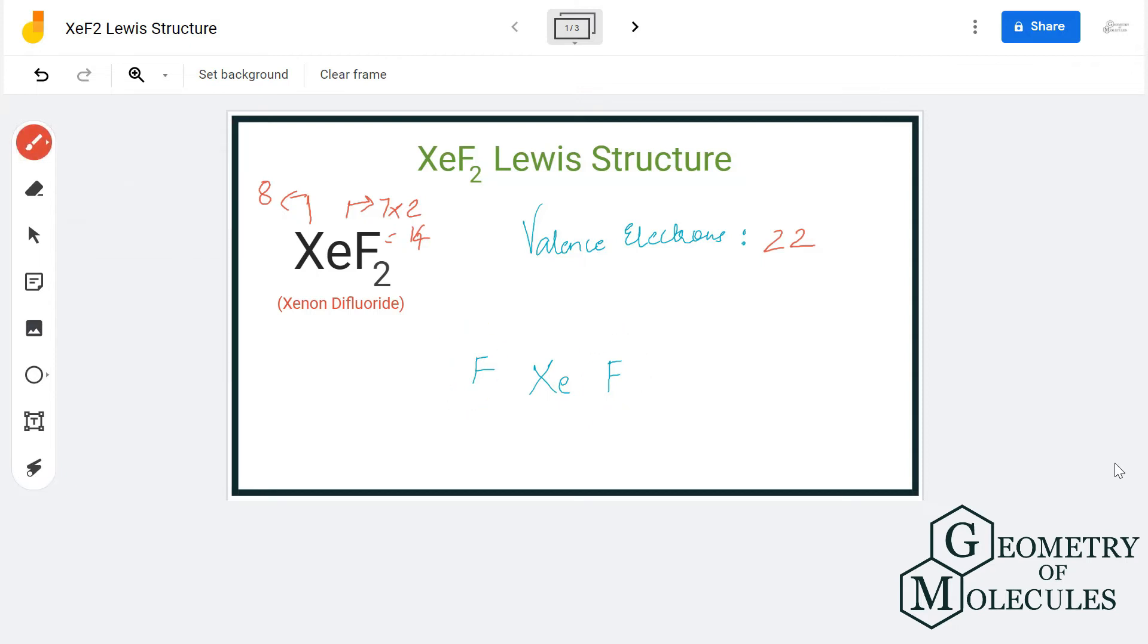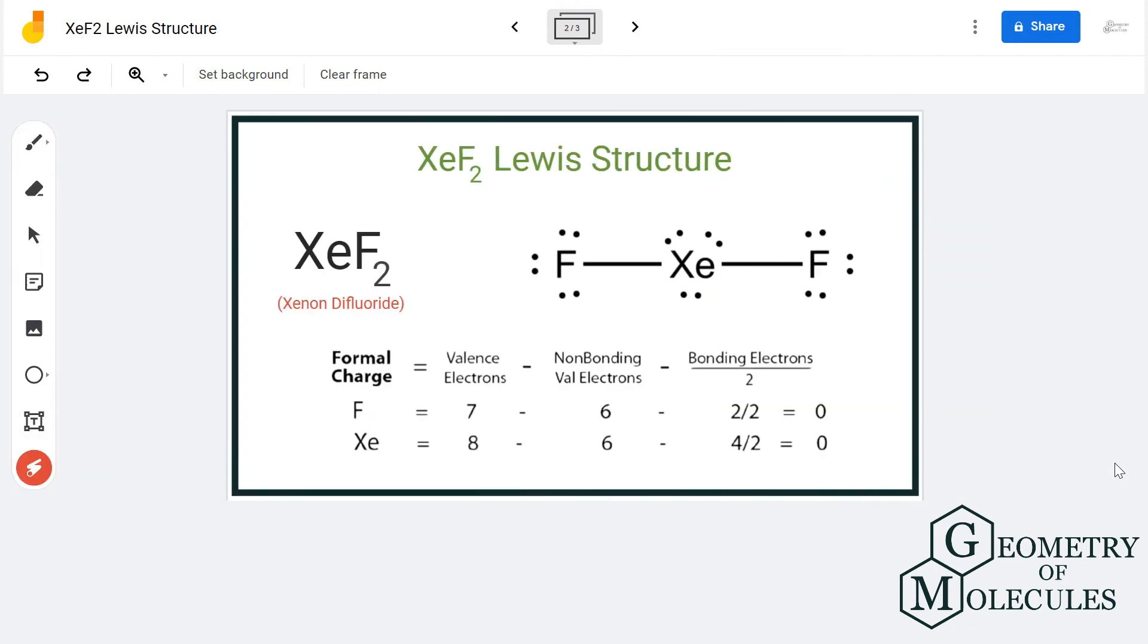There will be a single bond between the xenon atom and fluorine atom, so we will show that by drawing a line. Now we are left with two more electrons. We could either make a double bond between F and Xe, but this will not be possible because fluorine is the most electronegative atom and it cannot form a double bond.